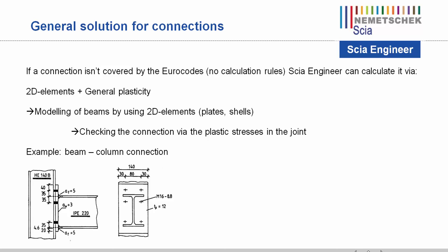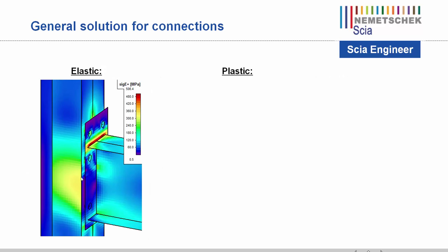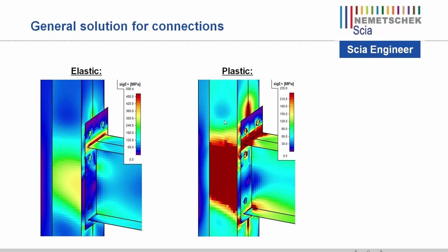Basically, you model the joint via 2D elements. Without the plastic module, peak stresses occur above the maximum stress of 235 MPa. But if you activate the plastic module, you can see that the connection still satisfies because the plastic stresses are distributed along the joint, so the maximum stress doesn't surpass 235 MPa. Let's try to model this in SIA Engineer and show how easily this can be done.